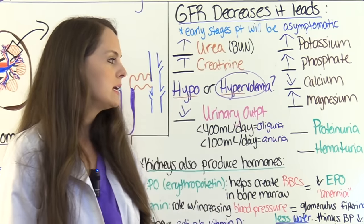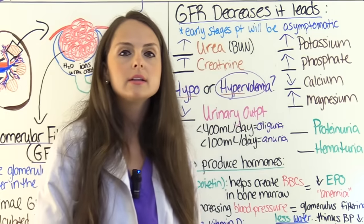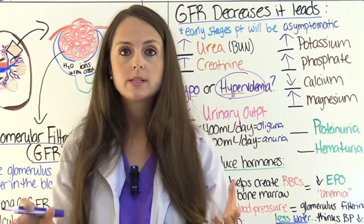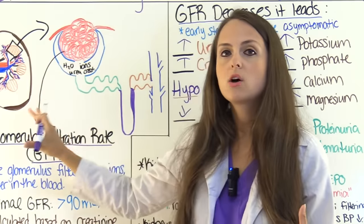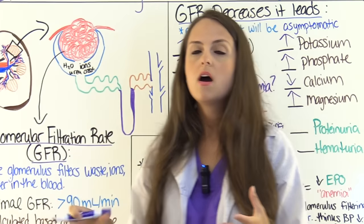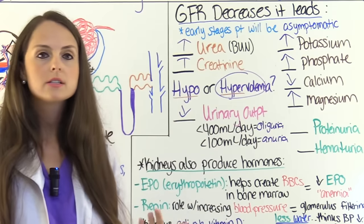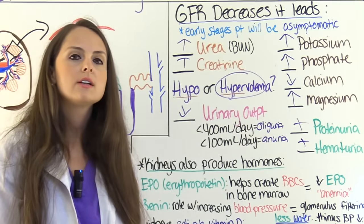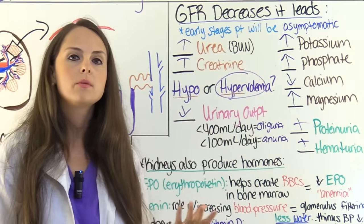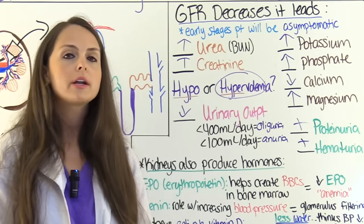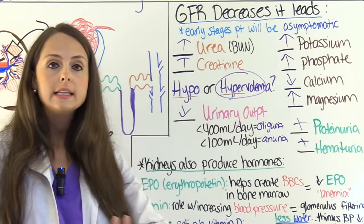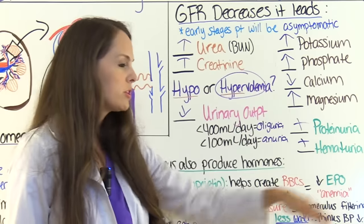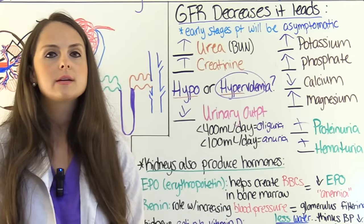The glomerulus should not filter proteins and blood cells, but in chronic kidney disease the whole structure is affected. So protein will get through into the urine, and the patient will likely have blood in the urine as well. When we lose protein in the urine, albumin — which regulates oncotic pressure — decreases, allowing fluid within capillaries to leak into interstitial tissue, causing more swelling and edema. With hematuria, we're losing red blood cells in the urine, leading to anemia.